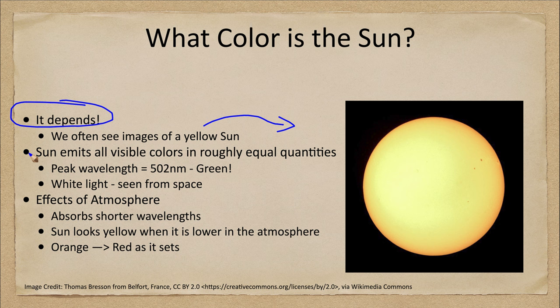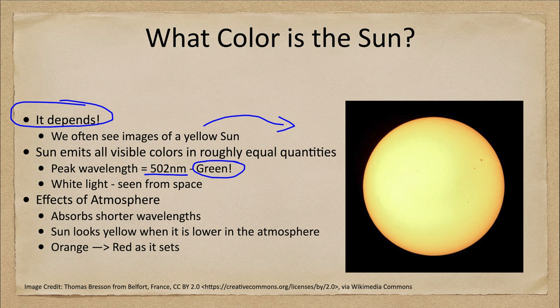If we actually calculate where the peak wavelength of the Sun is, we can do that based on its temperature, and it will peak at 502 nanometers. That's actually in the green portion of the spectrum. So if we really want to be particular, the Sun is emitting more green light than any other type of light.